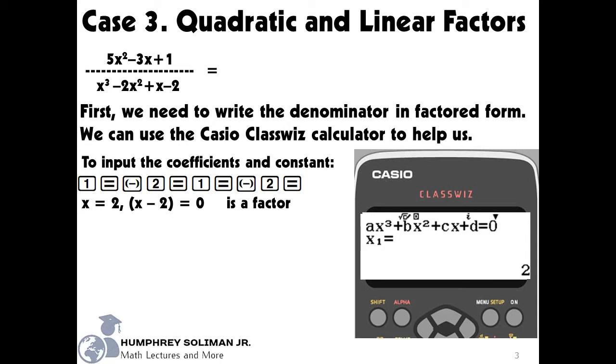And if we press the equals key again, we will see our second value of x, x equals i. This gives us the second factor which is x minus i. And if we press the equals key one more time, we will see our third value of x, x equals negative i. This will give us the third factor which is x plus i.